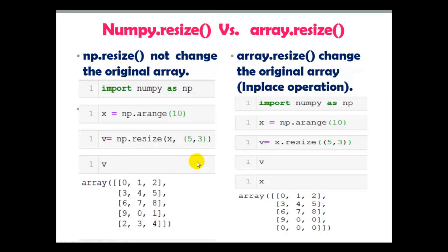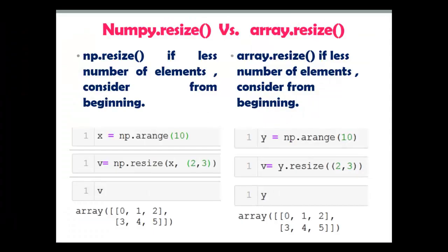That you can see here: if the number of elements you pass in the resize is less compared to the array you created, you can see the example on the left side. I have created a 1D array with np.arrange containing 10 elements, but when you give np.resize only 2 cross 3 — that's 6 elements — no problem. It will consider the first 6 elements and create a 2D array. Same for array.resize: if you pass fewer elements in the resize, it will consider the elements accordingly.